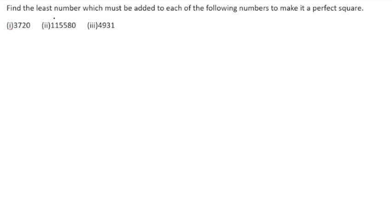Find the least number which must be added to each of the following numbers to make it a perfect square. There is some number which needs to be added to the given numbers so that they will become a perfect square. We will start from the first part.